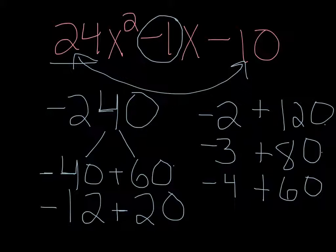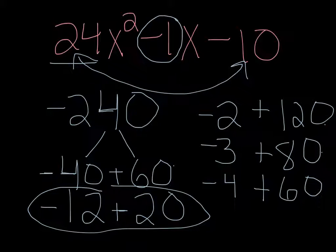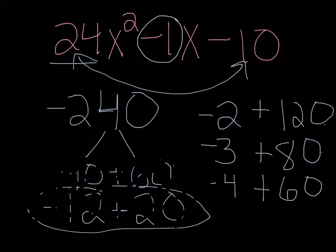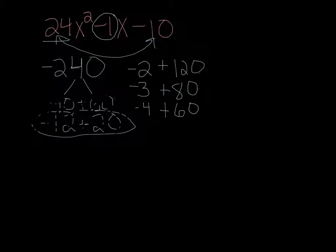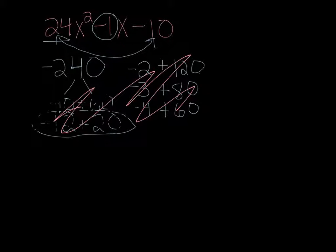So the pairs that we've picked all equal 240, but none of them are getting us close to negative 1. To get close to negative 1, the two numbers would have to just be one apart. So you want to start trying to think of numbers that are close together. We weren't too far with the negative 12 and 20. When we add those together we get 8, so we want to try to find something a little bit better. So I'm going to erase these pairs.